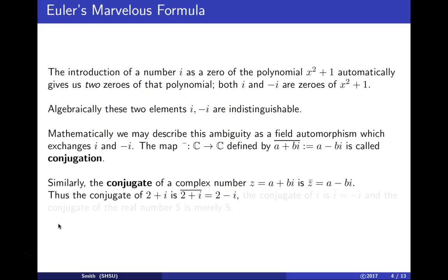Thus the conjugate of 2 + i is 2 - i. The conjugate of i is -i, and the conjugate of 5 is just 5.